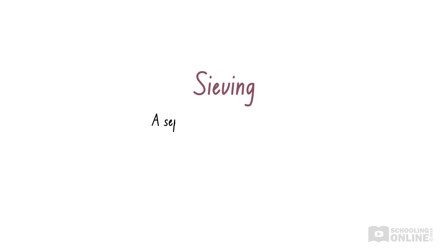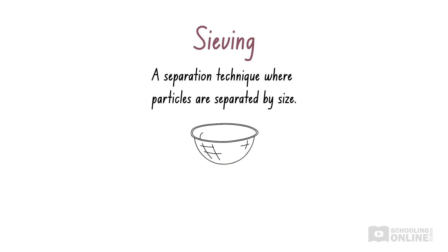Sometimes the major difference between two or more components in a mixture is particle size. As mentioned in our lesson on pure substances and mixtures, sieving is a separation technique where particles are separated by size. Substances with particles that are smaller than the holes in the sieve will pass through, while substances with larger particles will collect in the sieve.